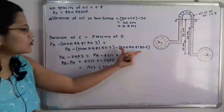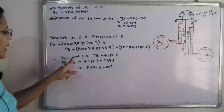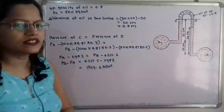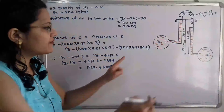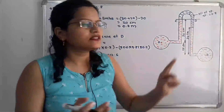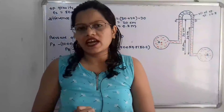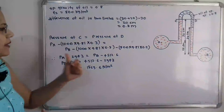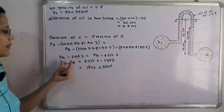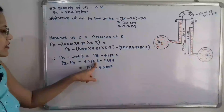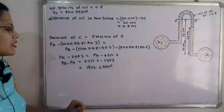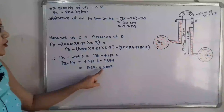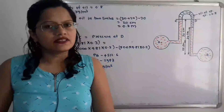Simplifying the brackets: P_A − 2943 = P_B − 4512.6. Rearranging to find the pressure difference, P_B − P_A = 4512.6 − 2943, which gives the answer: P_B − P_A = 1569.6 Newtons per meter square. This is the final answer.